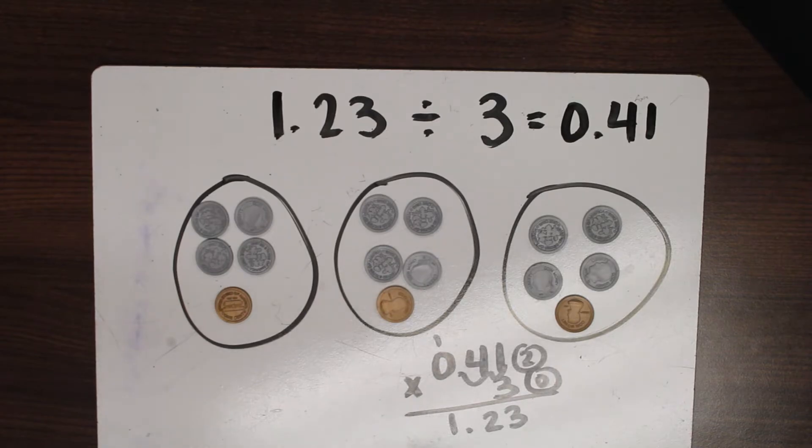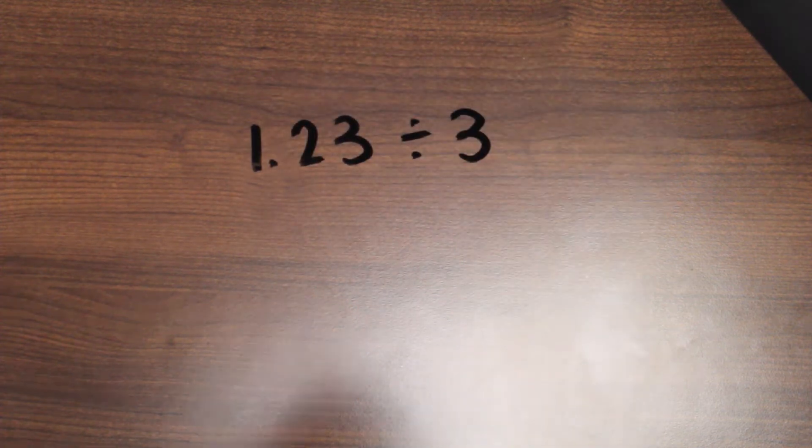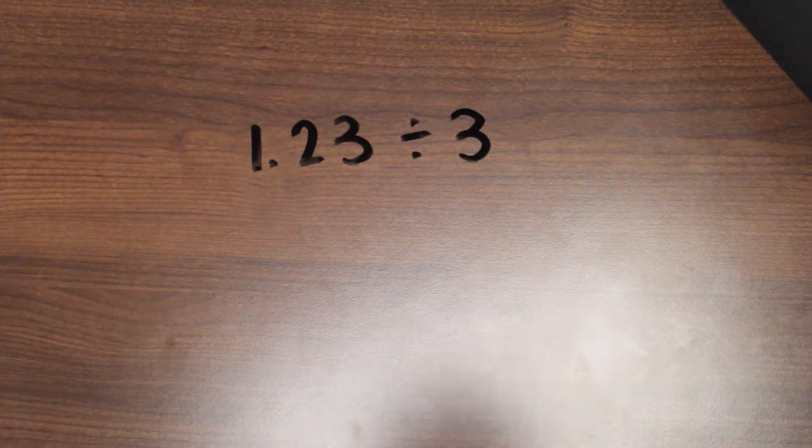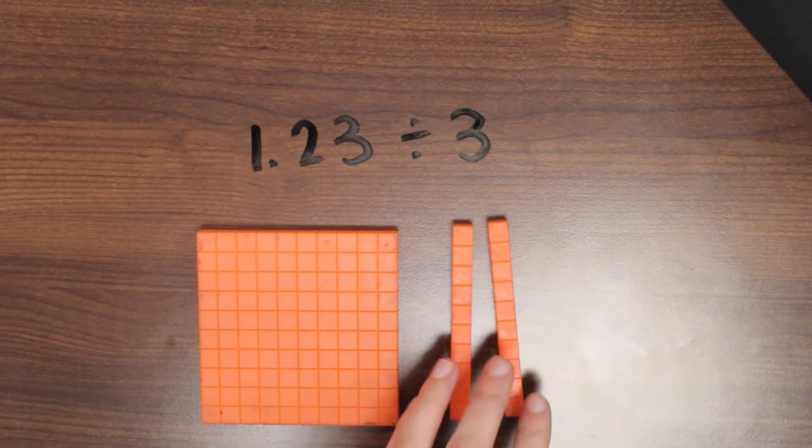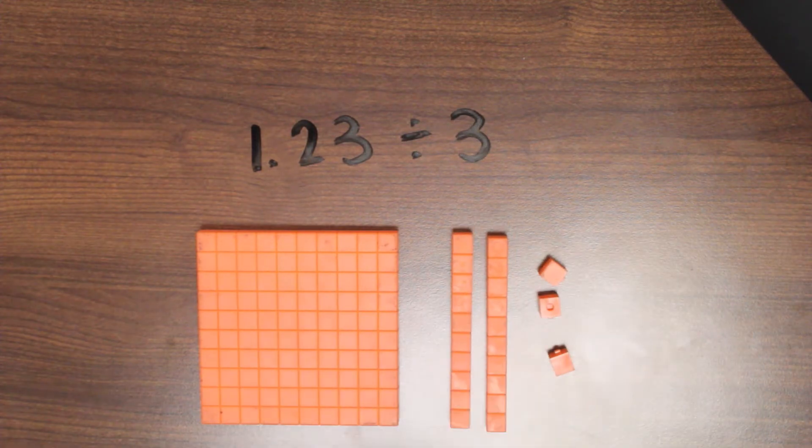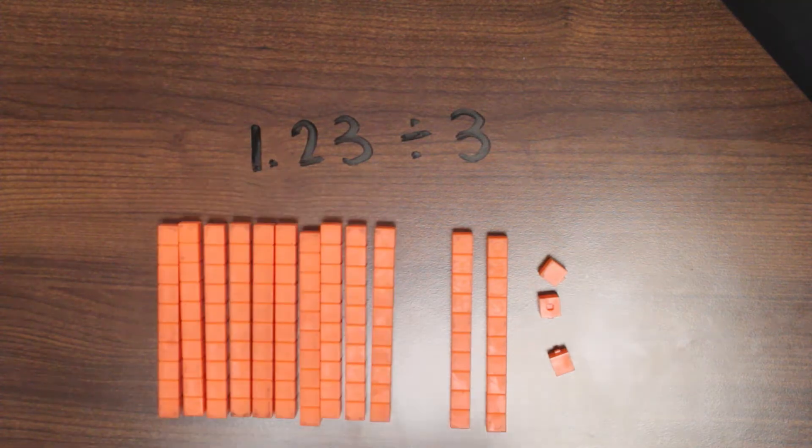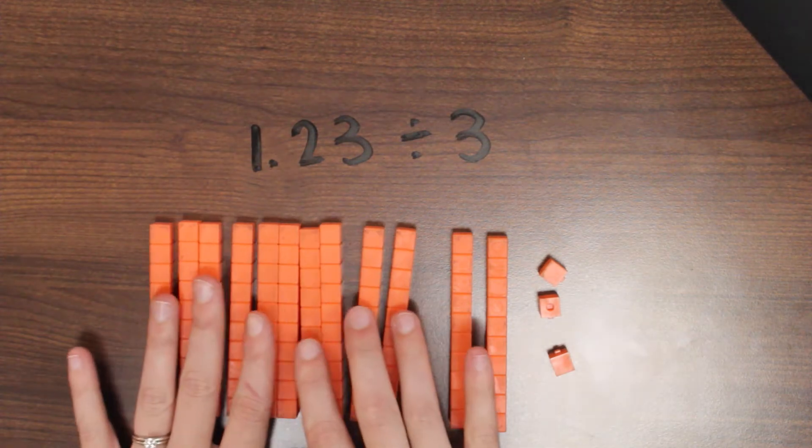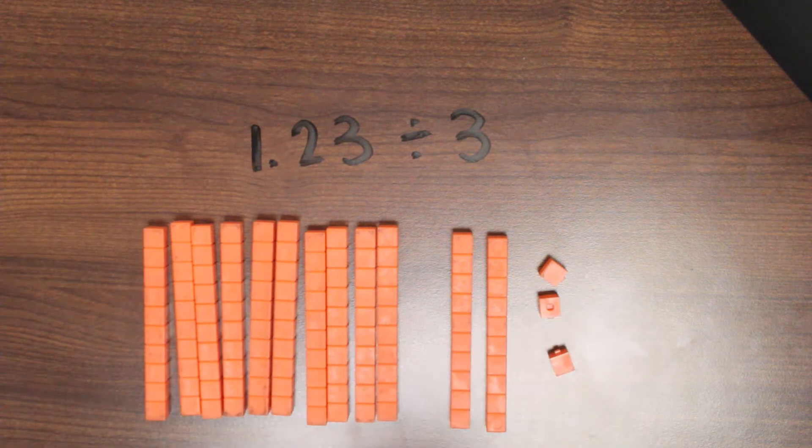I got another type of model for you, this time with place value blocks. We're going to do the same problem, just for simplicity. We'll do 1.23 divided by 3. We already know it equals 41 hundredths, so let's see if we can model that this way too. So we have 1 whole and 23 hundredths. If I want to split this into three equal groups, you can't do that with this whole either. Now they're tenths. So it's still the same amount. This is still one whole. I have one whole and 23 hundredths, but now I can split it into three equal groups.